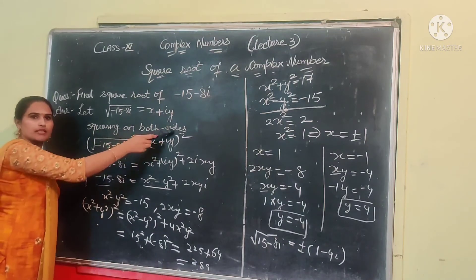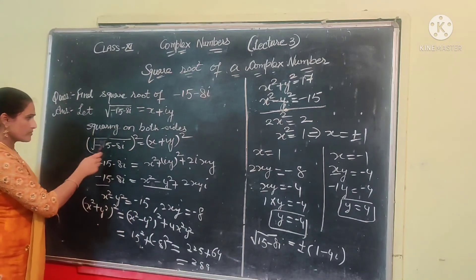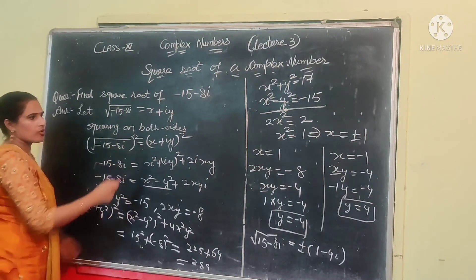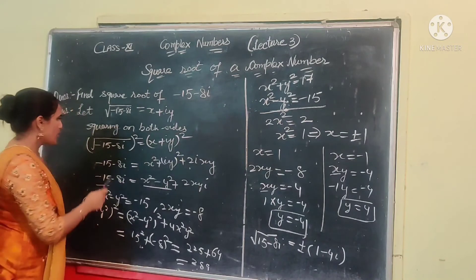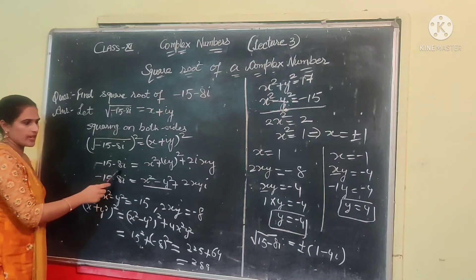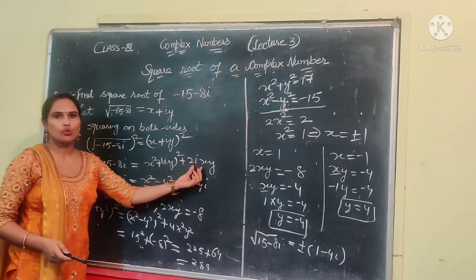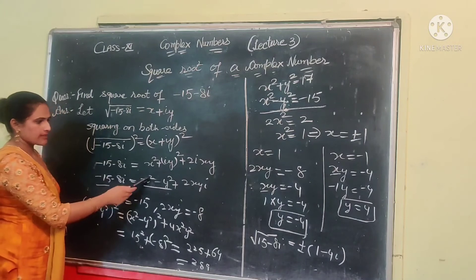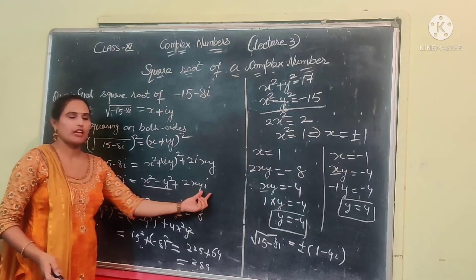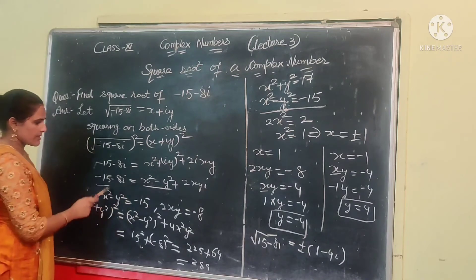Squaring on both sides — all steps for finding the square root of a complex number are the same. Squaring both sides, (minus 15 minus 8 iota) equals (x plus iota y) squared. The square root and square cancel each other, giving minus 15 minus 8 iota equals x squared minus y squared plus 2xy iota. Equating real and imaginary parts: x squared minus y squared equals minus 15, and 2xy equals minus 8.